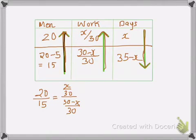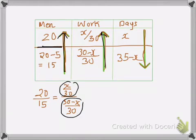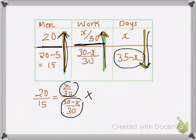Since the men and work arrows are in the same direction, we can write 20/15 is equal to (x/30) divided by (30-x)/30. But here we have to reciprocal it because the men arrow and the days arrow are in opposite direction.